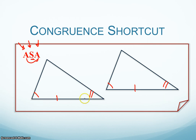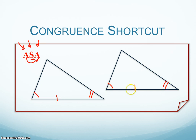We read them in order. We can either go left to right or right to left, clockwise or counterclockwise: angle-side-angle, or backwards angle-side-angle — as long as the side is between the two angles, just like it's written with the side between the two angles. So if I have this shortcut, I know my two triangles are congruent.